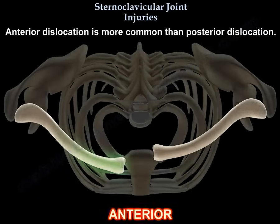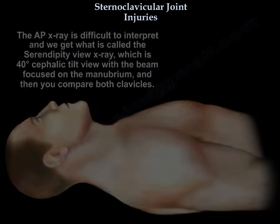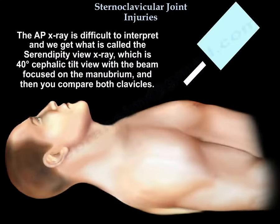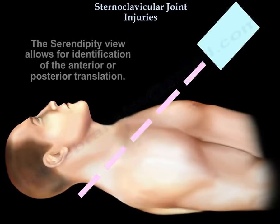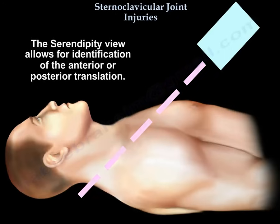Anterior dislocation is more common than posterior dislocation. The AP x-ray is difficult to interpret, and there is what you call the serendipity view, which is a 40-degree cephalic tilt view with the beam focused on the manubrium, and you compare both clavicles. It allows identification of anterior or posterior translation.